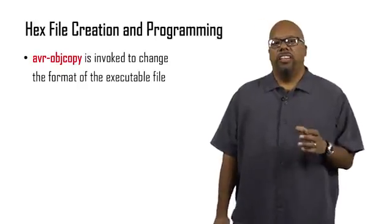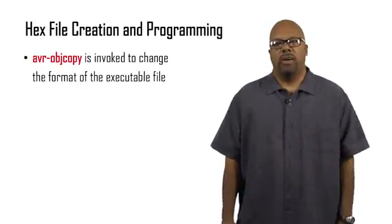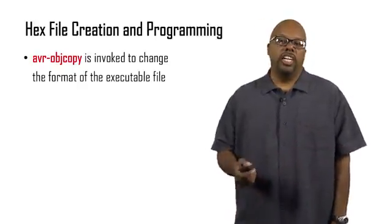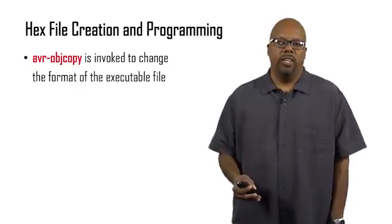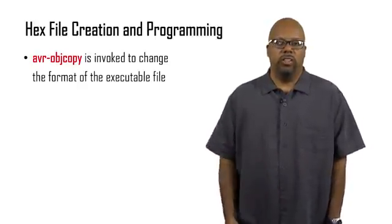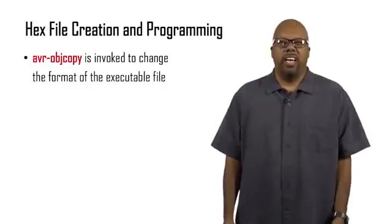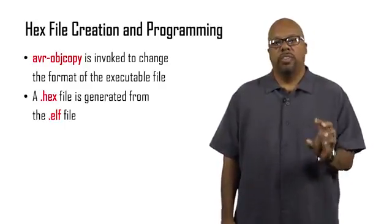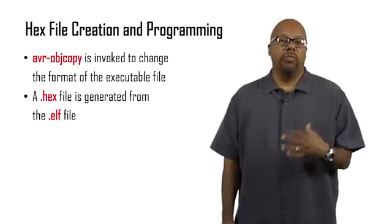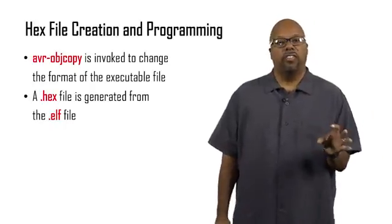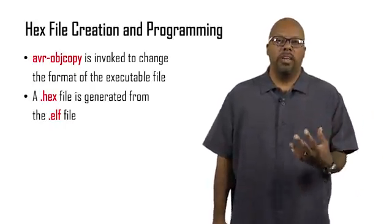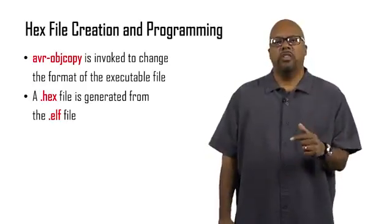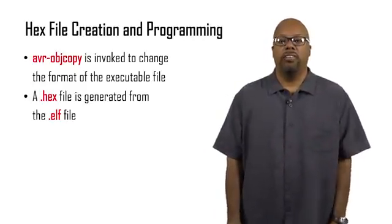For that, the IDE uses a program called AVR-objcopy, and that's invoked to change the format of the executable file to the one that the Arduino expects to see. This is a formatting thing. The .hex file is generated from the .elf file created after linking. It changes from one format to another, and the hex file can actually be executed by the Arduino processor.